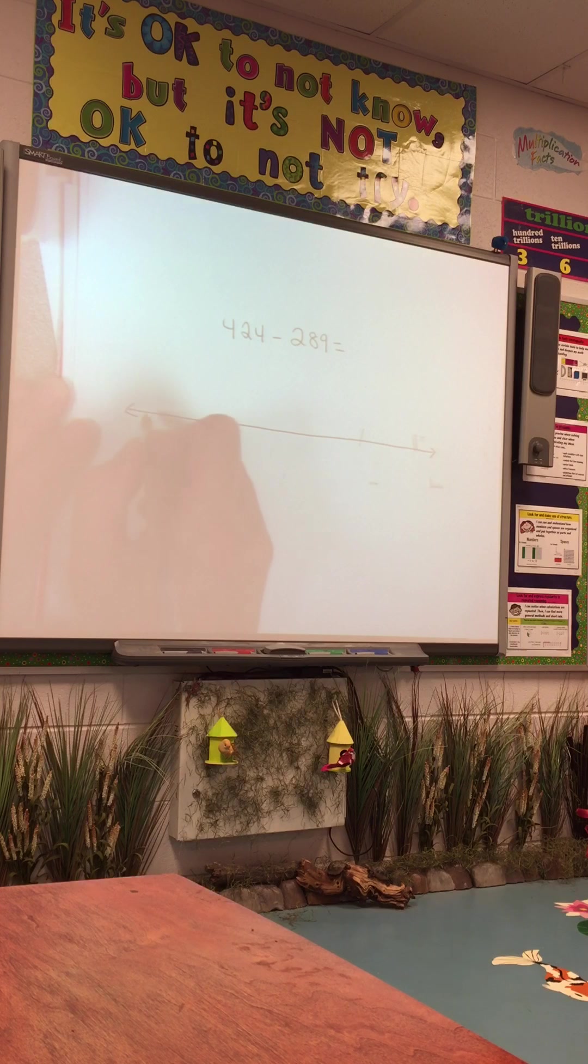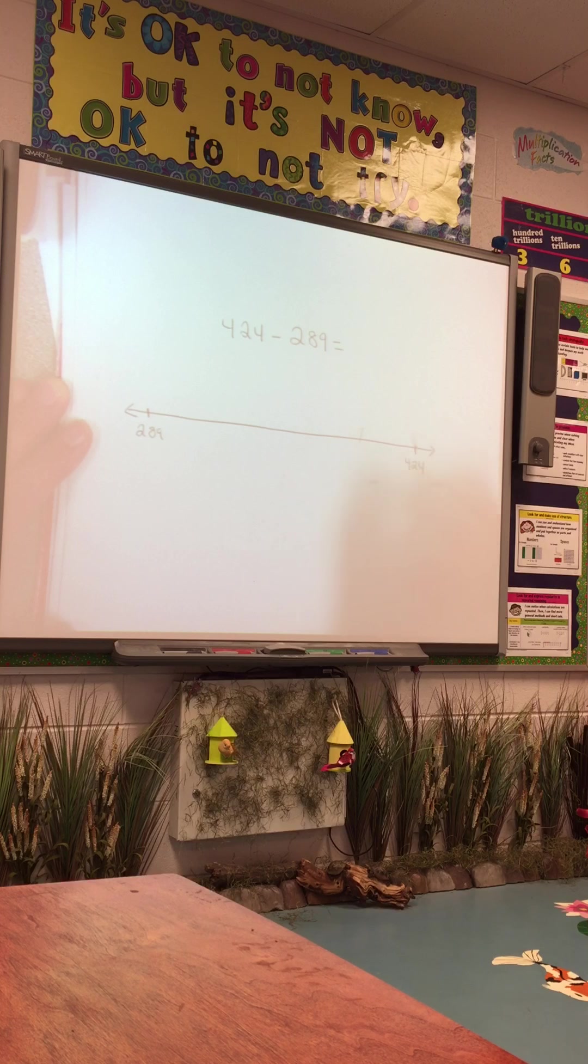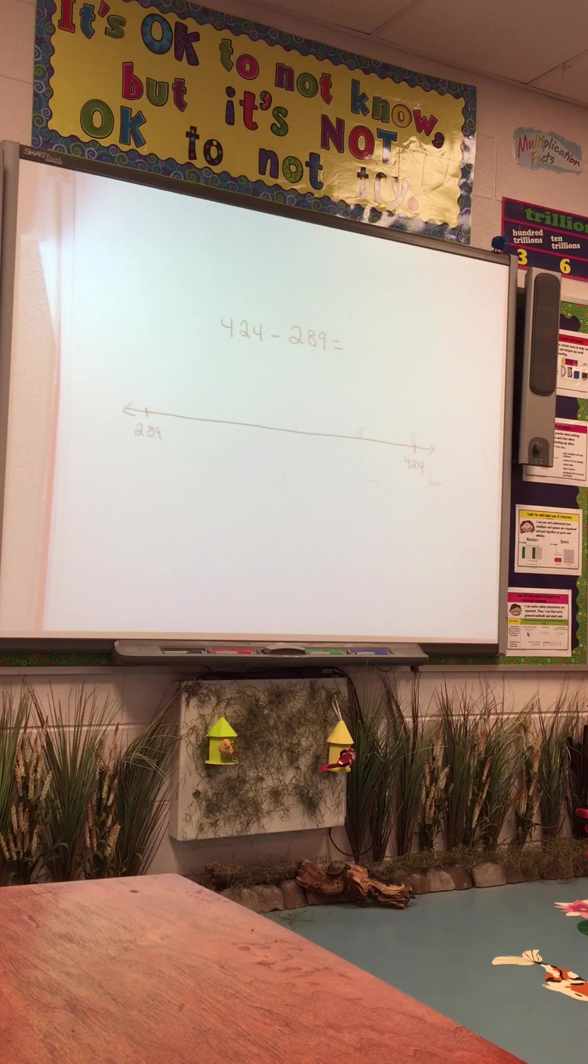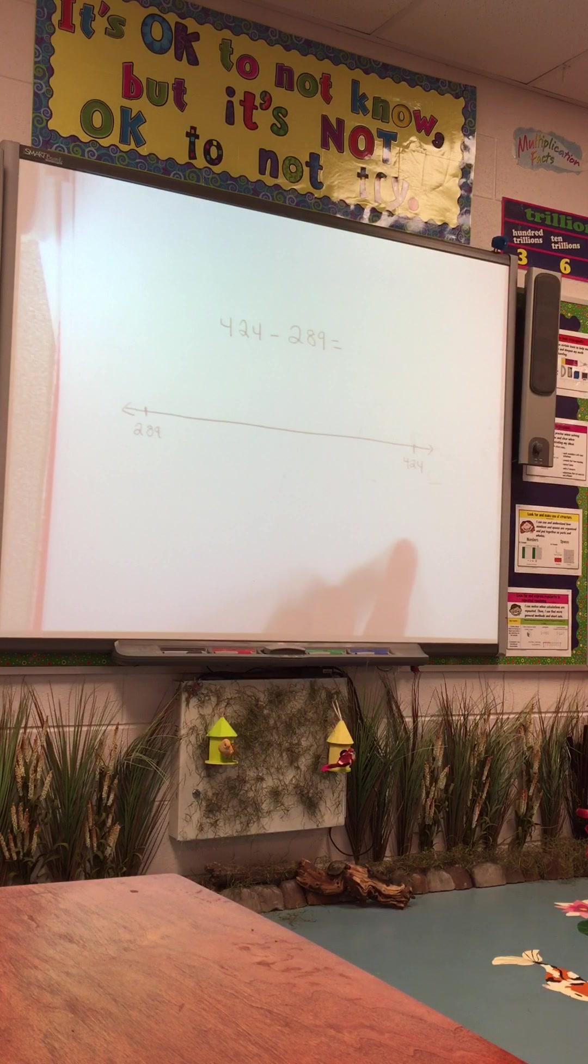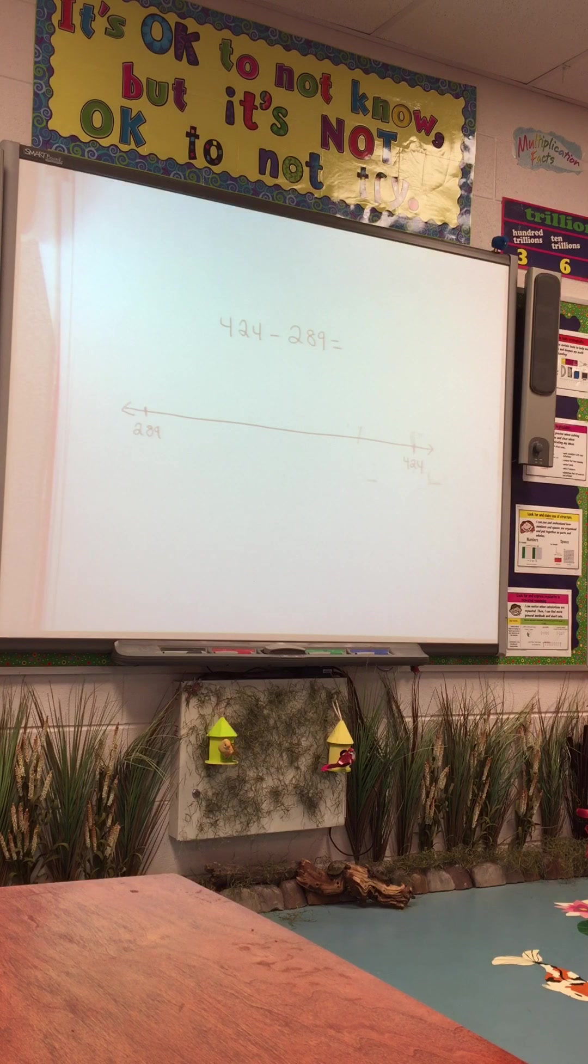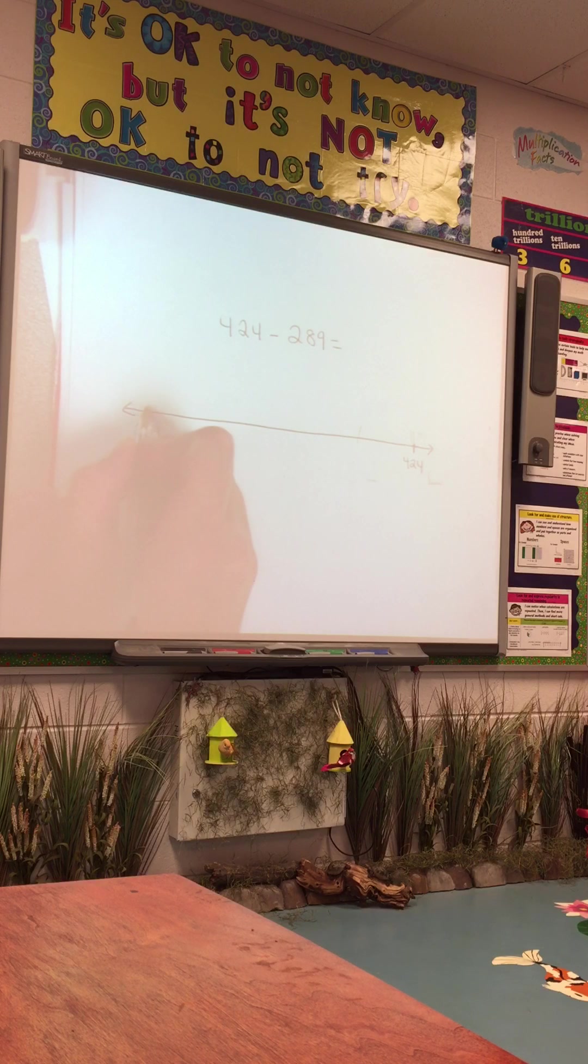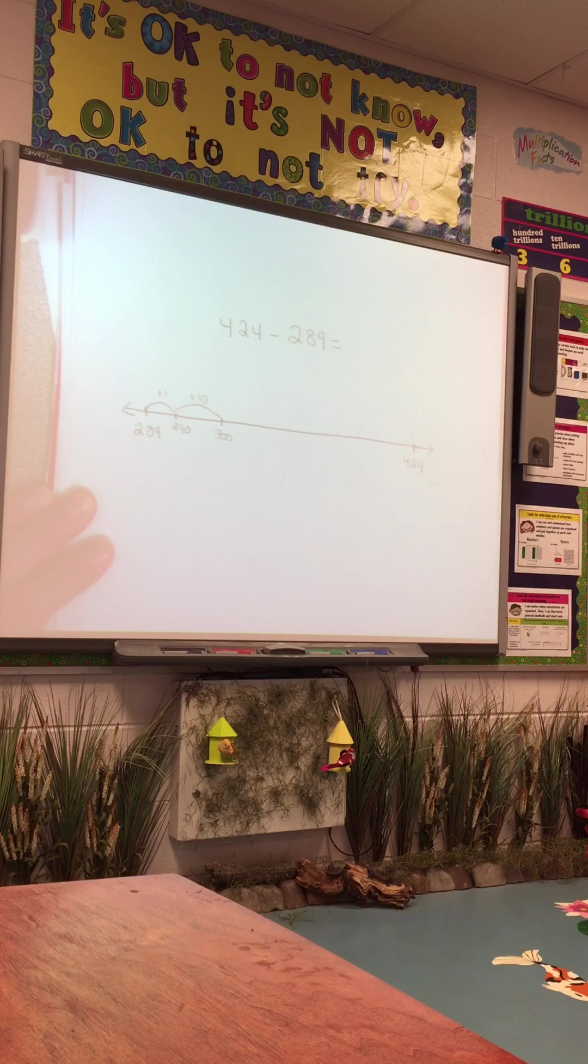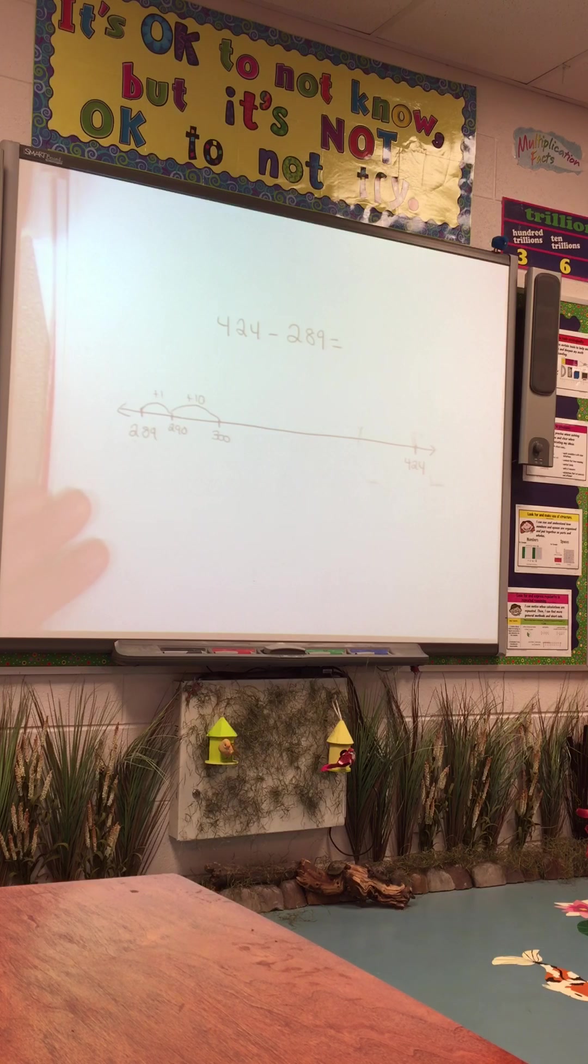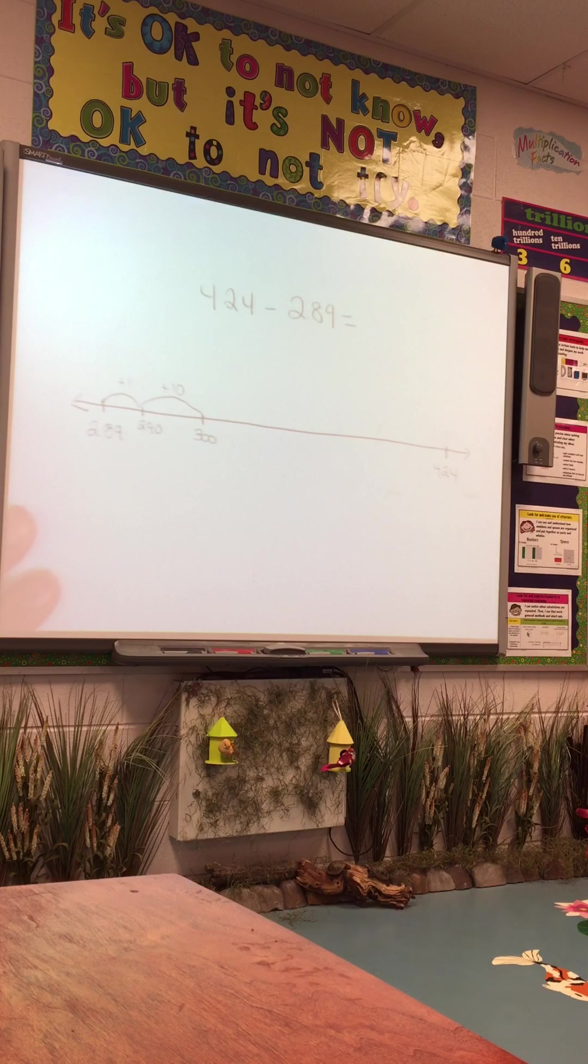minus 289. There are a few strategies. One, if they use the number line, they can actually add to subtract, so they're finding the difference between 289 and 424. There's two ways to do the number line. One way is by looking at the place and getting each digit to the number you need, or you can work with friendly numbers. I'm going to start with friendly numbers first. So 289, if I do plus 1, I'm at 290. From 290, I can see that if I do plus 10